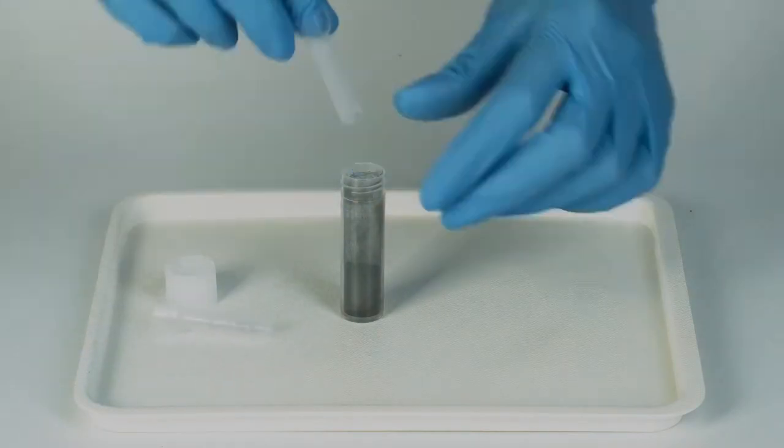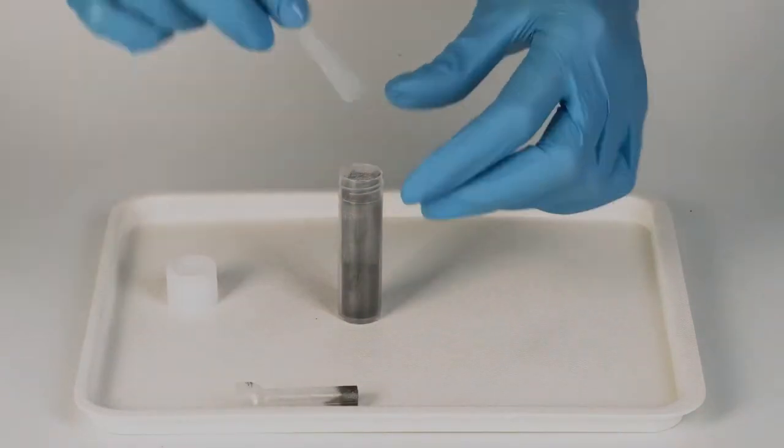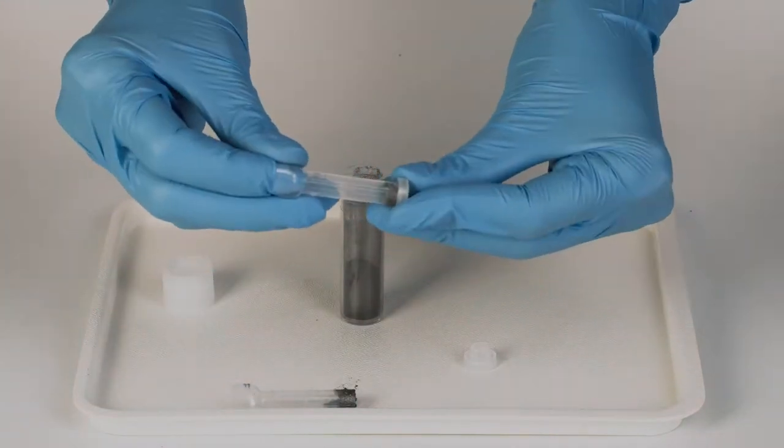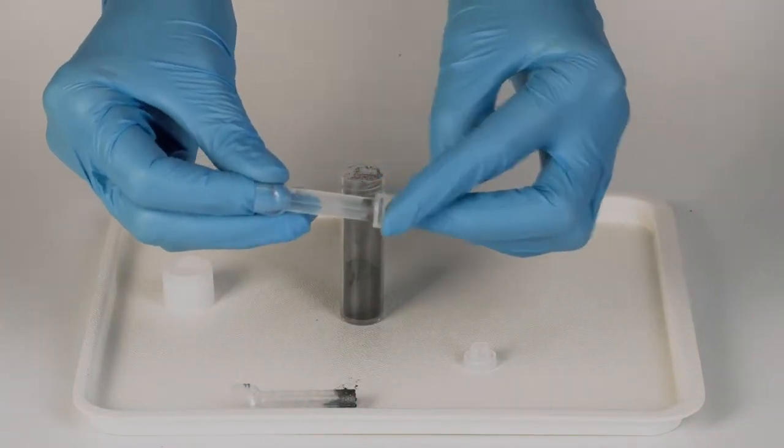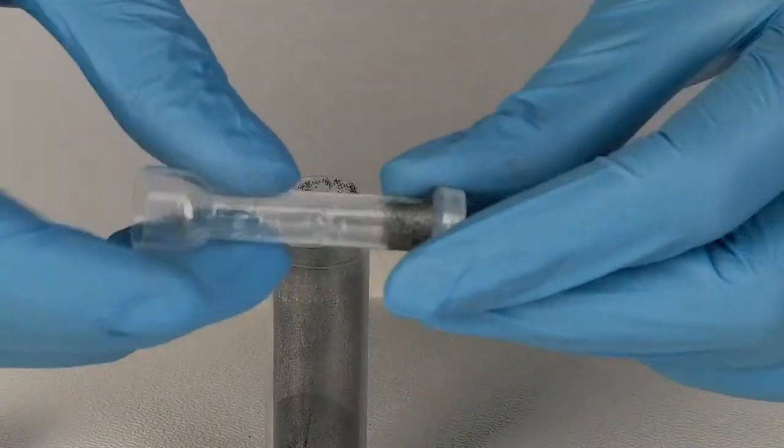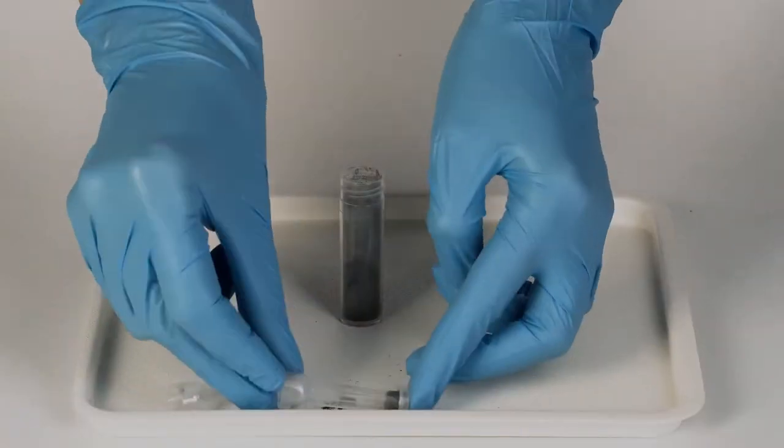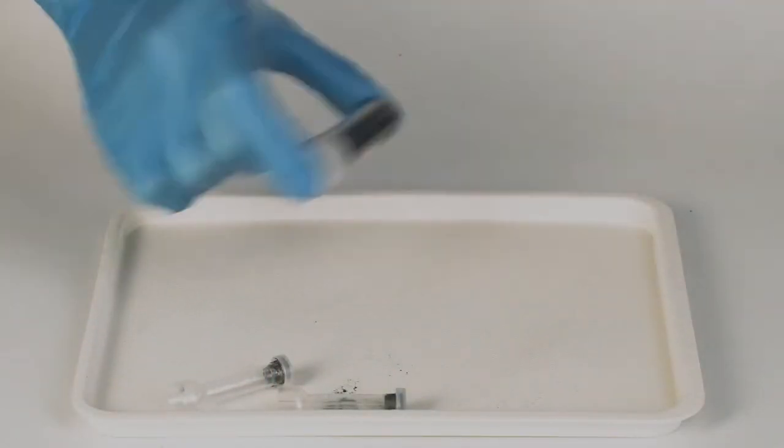Dip the end of the plastic tube into the prepared mixture. Repeat for the second plastic tube. Then seal both tubes with the small plastic caps. Close the vial and shake it for 10 seconds.